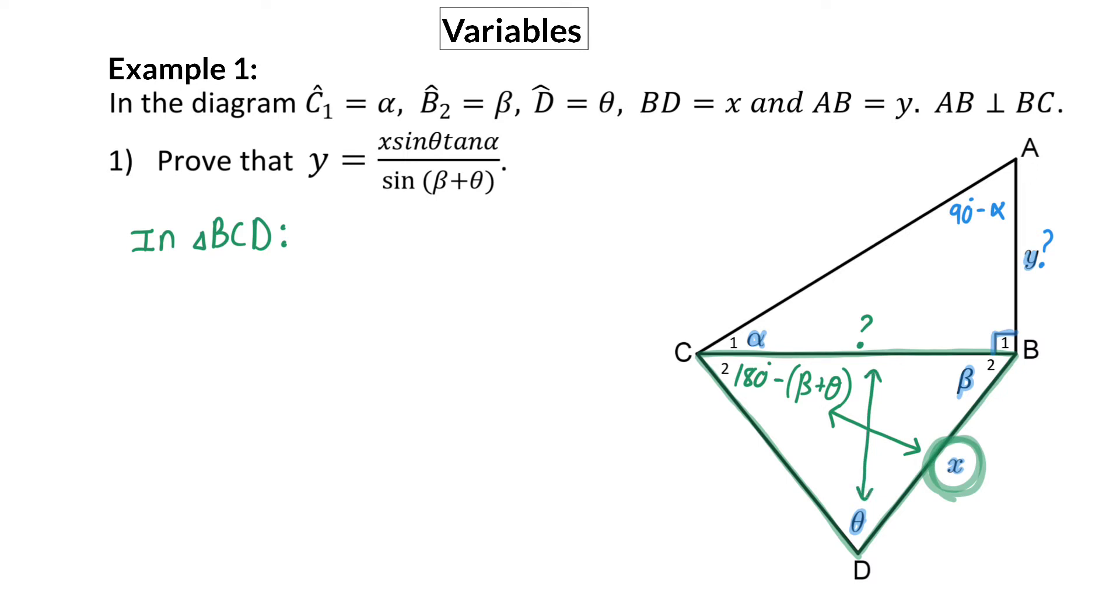Our second pair will be angle and side D, because we want to determine lowercase d or side CB. Because we are determining a side, I am putting the sides in the numerator and the angles in the denominator of my equation. Next,